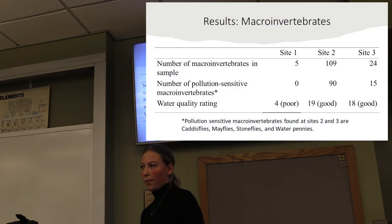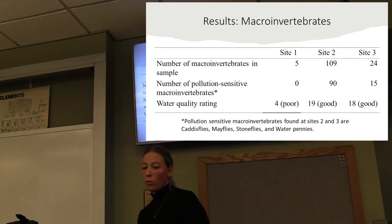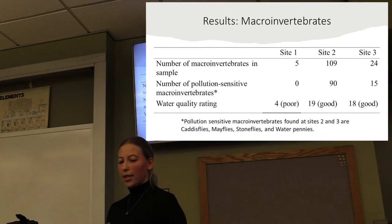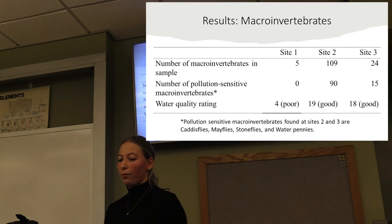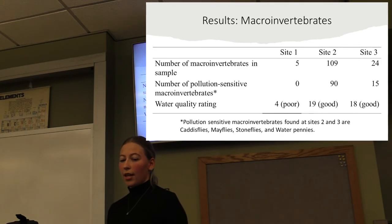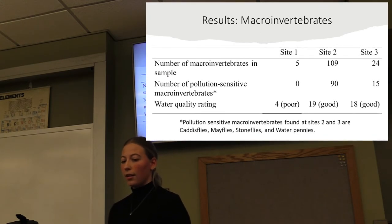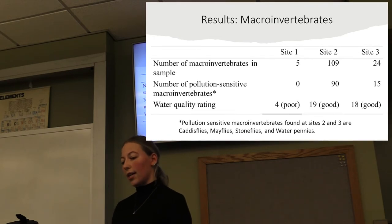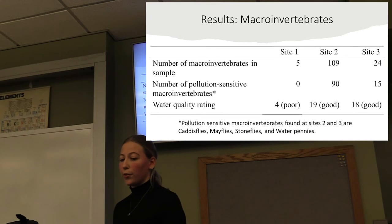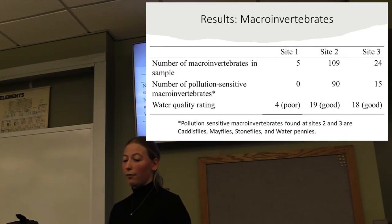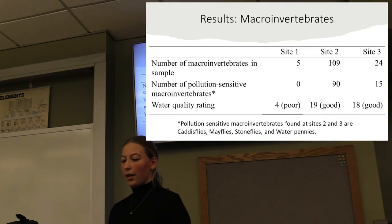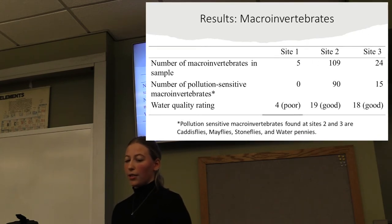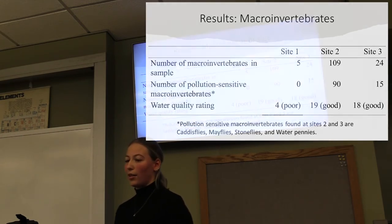Moving on to results — first, the macroinvertebrates. Overall, from the first site to the second and third, there was an increase in macroinvertebrates. We focus on pollution-sensitive macroinvertebrates for the water quality rating. At the first site, we only found five macroinvertebrates overall over two passes of a one-meter section, and none were pollution-sensitive, giving a water quality rating of 4, which is poor. At site two, we found 109 pollution-sensitive macroinvertebrates, giving an overall rating of 19, which is good. Site three also had good water quality with a rating of 18, though we only found 24 overall with 15 being pollution-sensitive. These included species like caddisflies, mayflies, stoneflies, and water pennies.